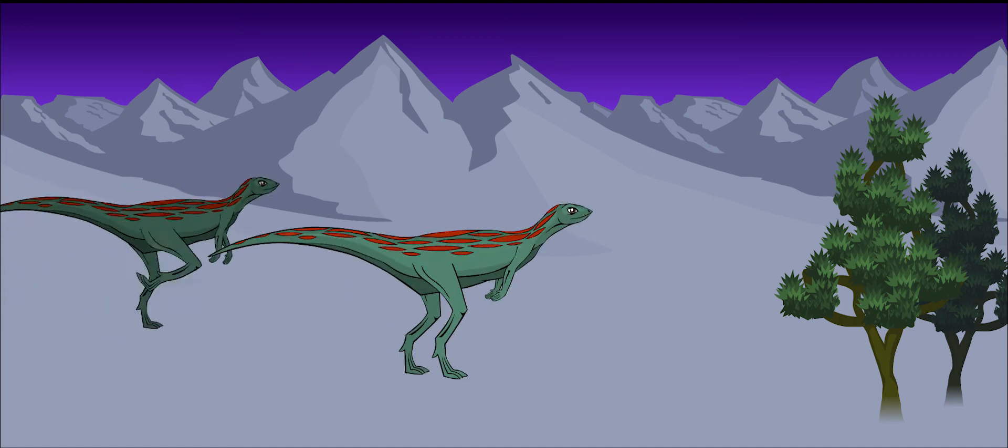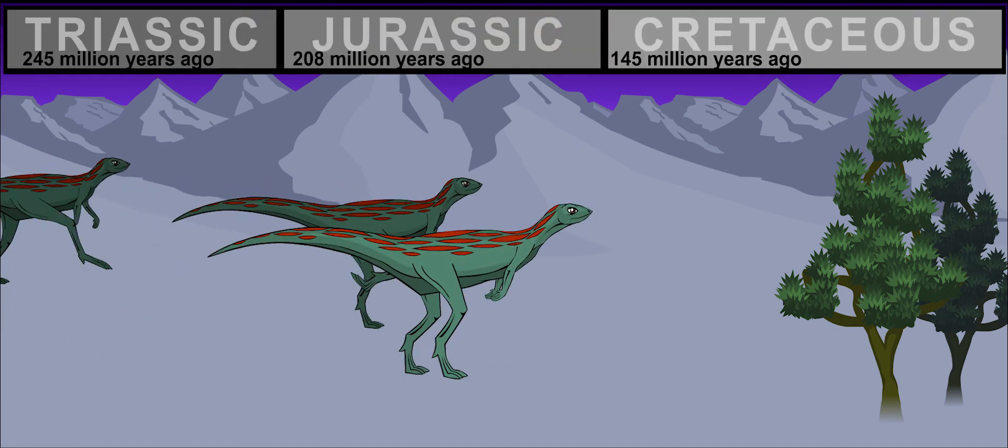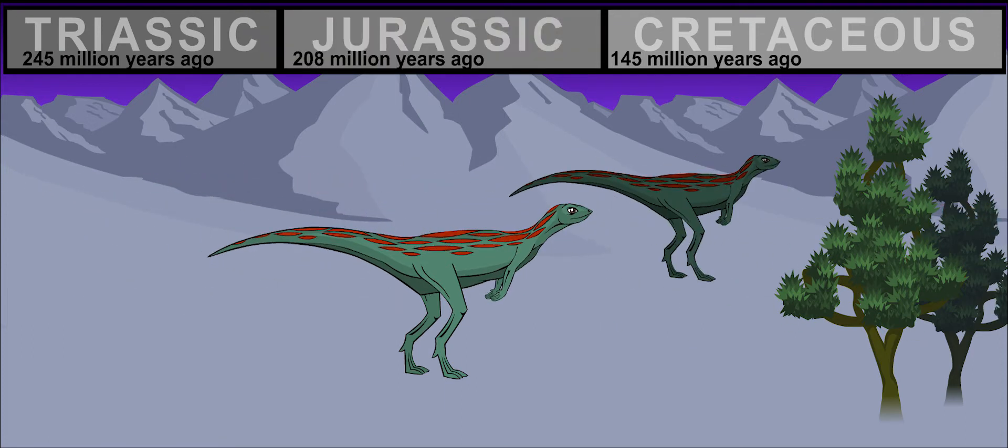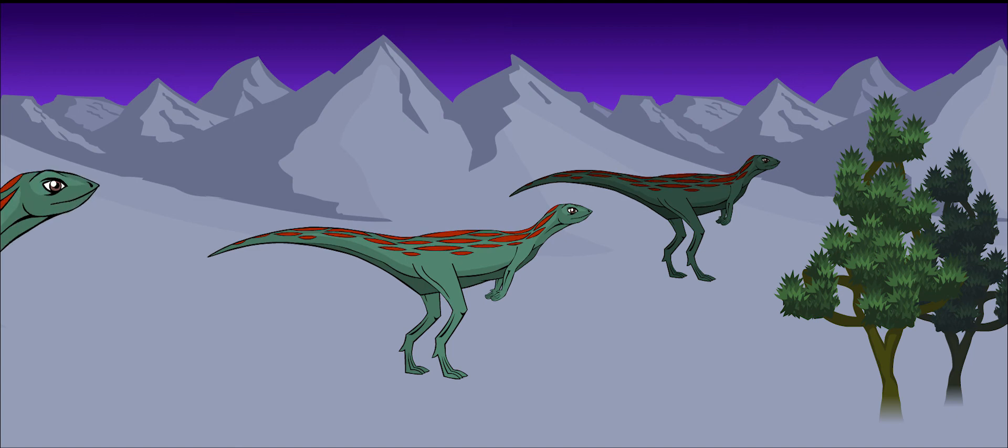Lesotosaurus lived about 208 to 200 million years ago. It came a little later in the Triassic period and lived until the middle of the Jurassic period.